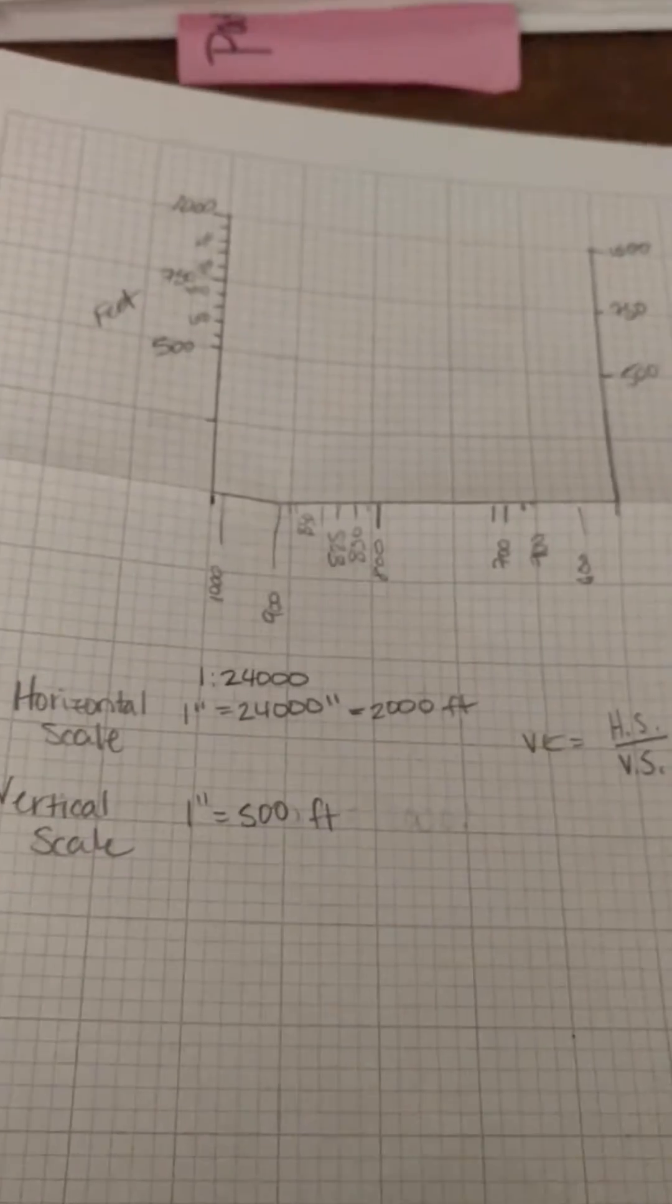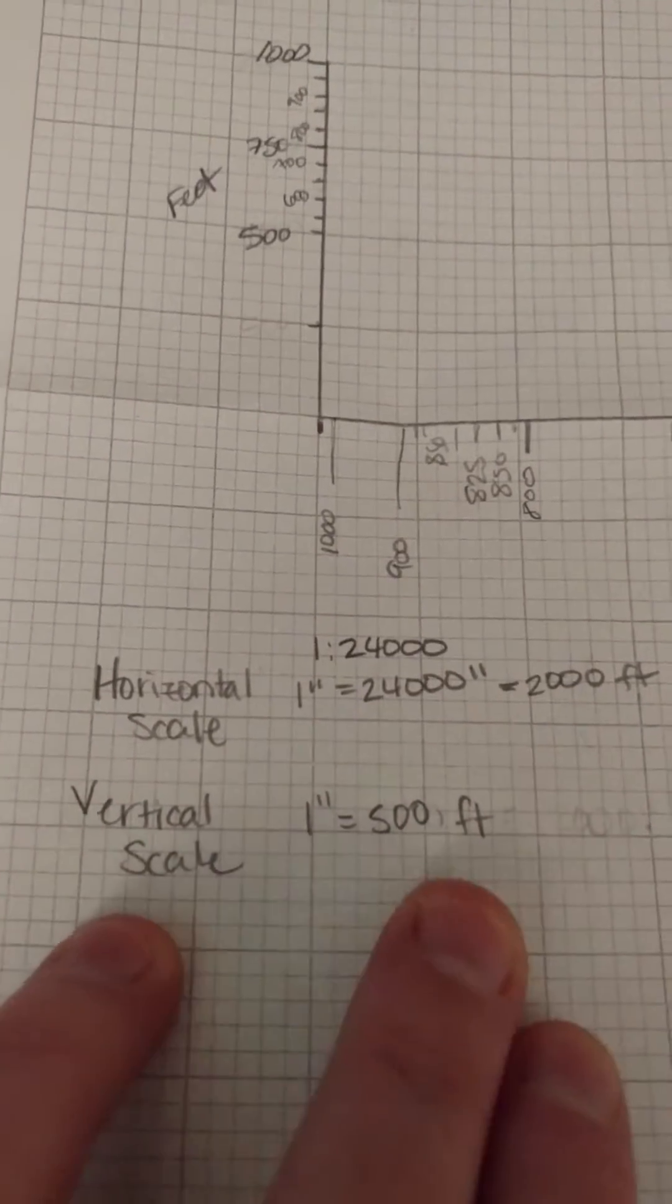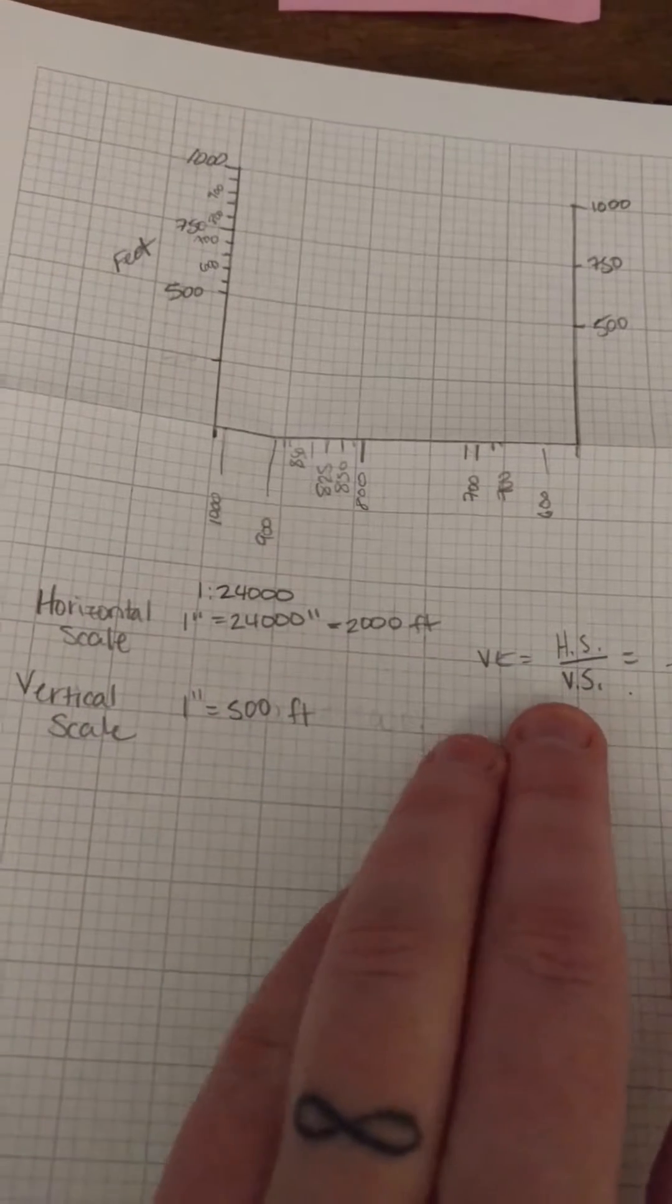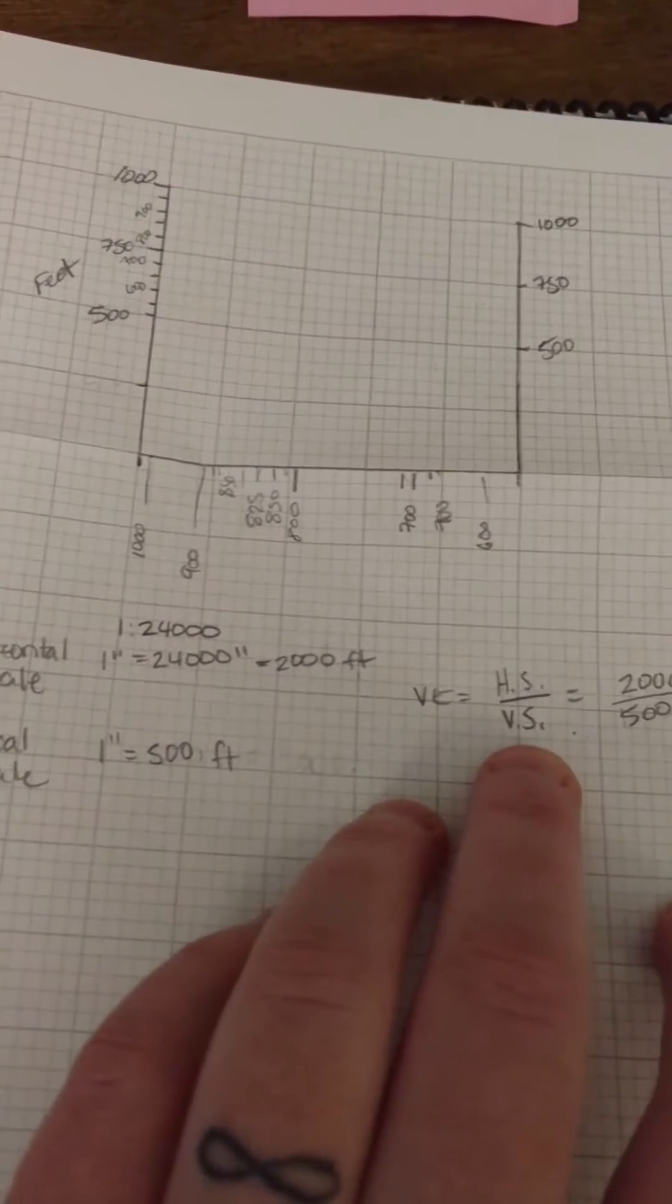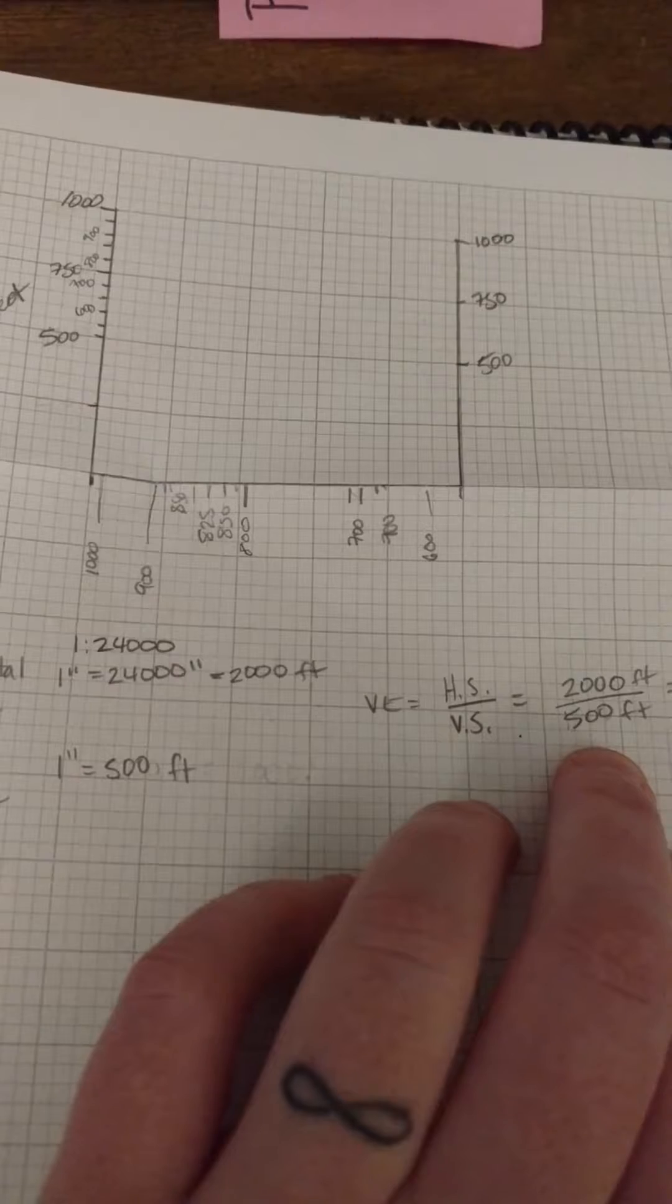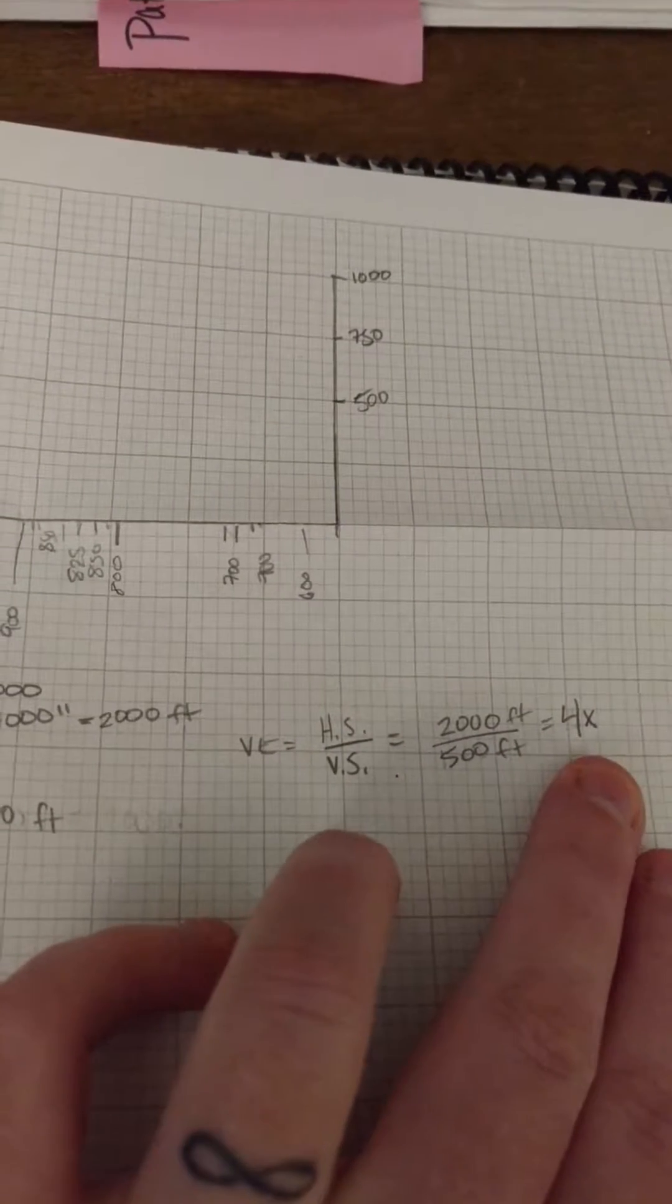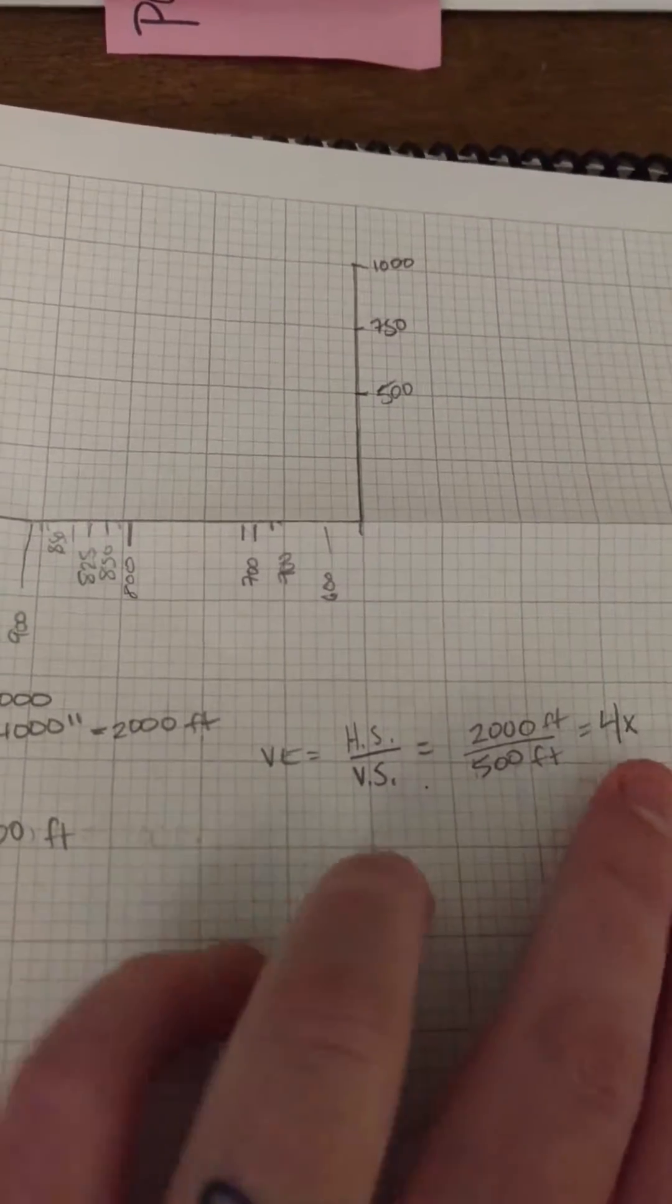So to get my vertical exaggeration then, I need to say my vertical exaggeration is 1 inch to every 500 feet, and so I'm going to take the formula for vertical exaggeration, horizontal scale divided by vertical scale, and I'm going to say an inch horizontally was 2,000 feet, an inch vertically was 500 feet, and so that's 4. So it's 4 times exaggeration. You'd write it just like that, 4x.